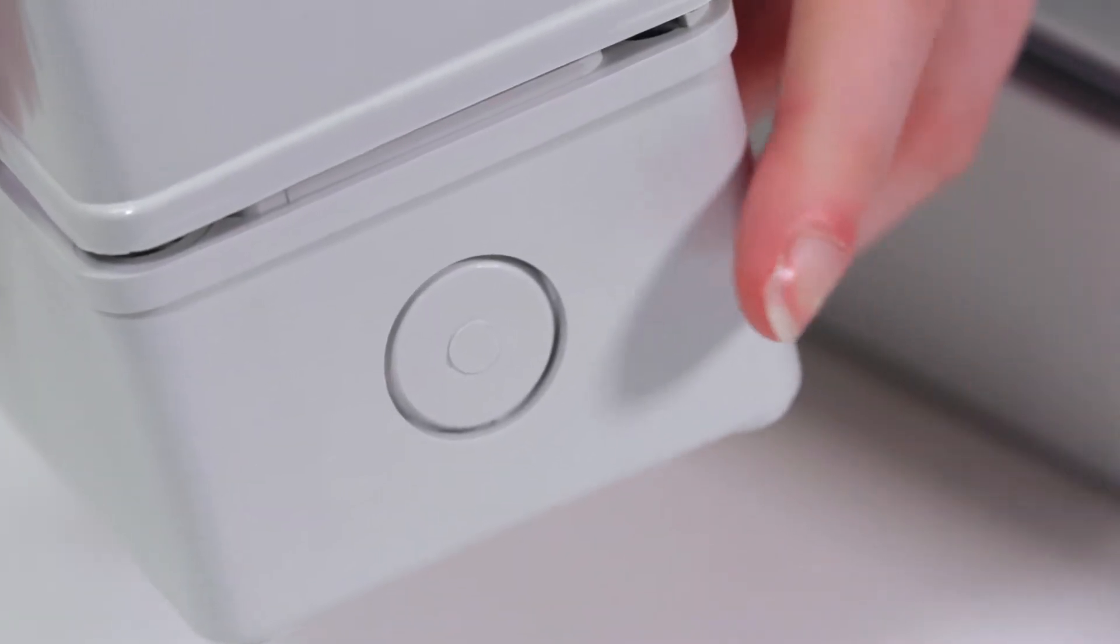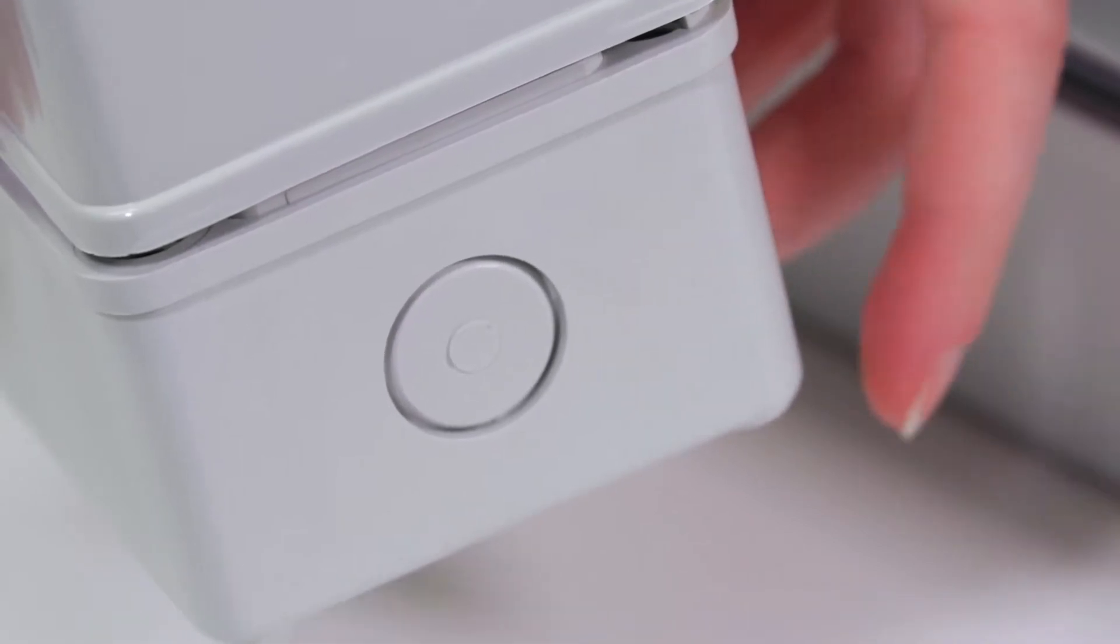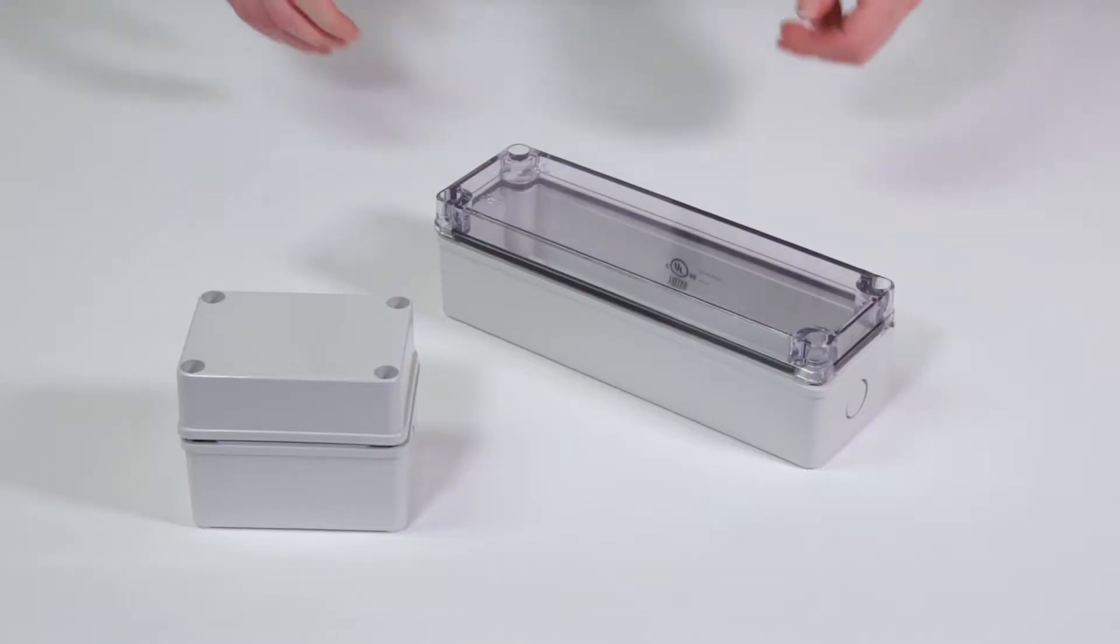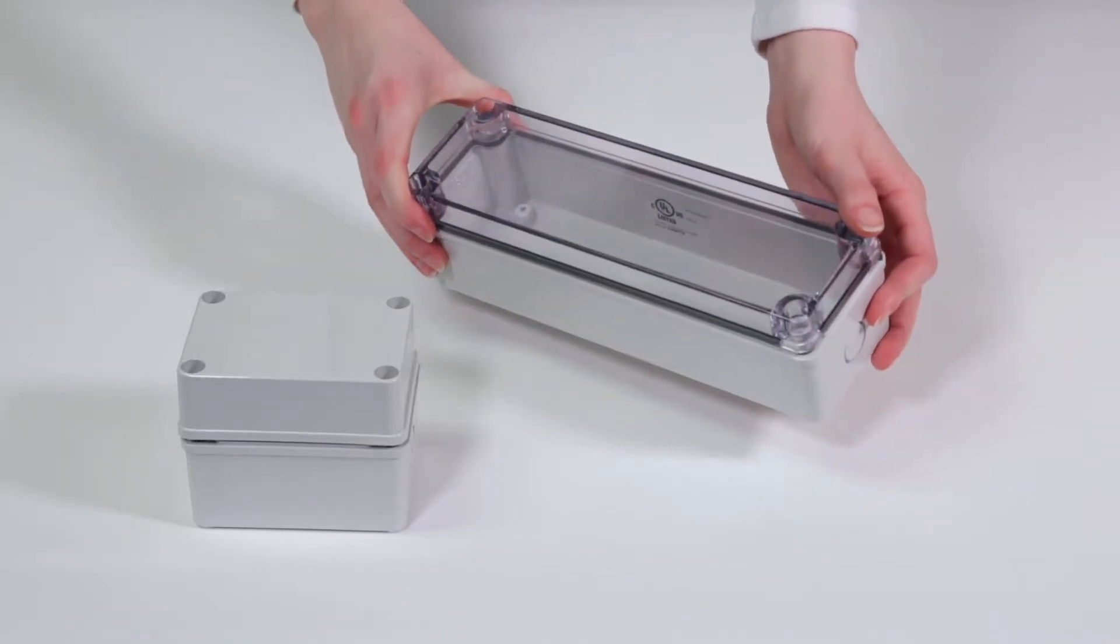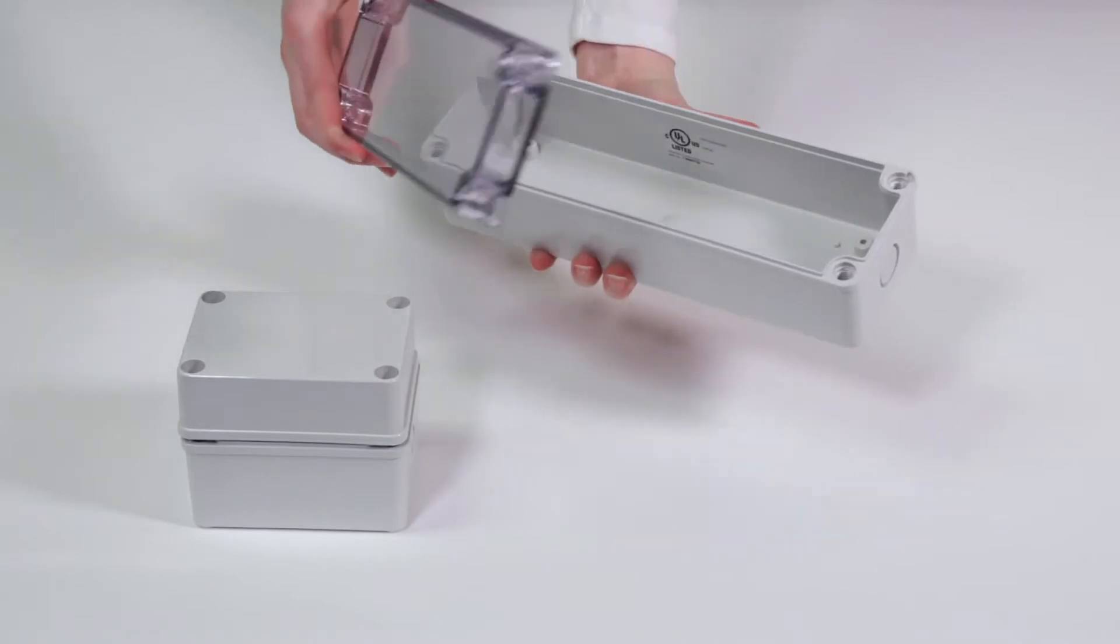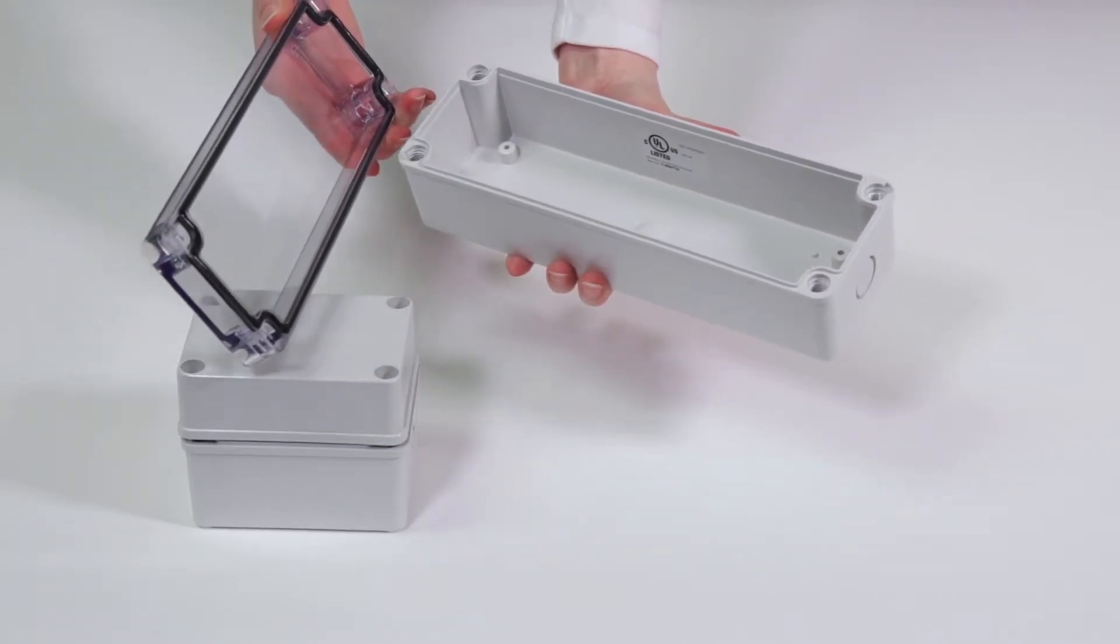Their pre-molded knockouts make for easy field installation and modification cost savings. As mentioned, these enclosures are rated IP67 to keep out dust and water in extreme conditions and are even submersible.